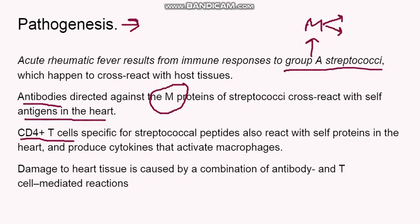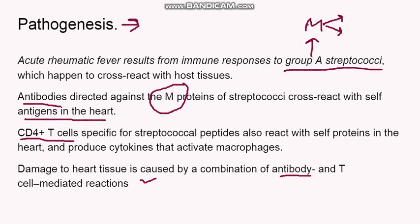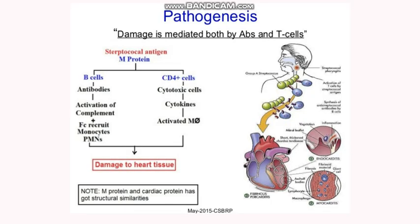So the damage to the heart tissue is a combination of both antibody and T cell mediated reactions. This is an immunologically mediated reaction and it can involve all the layers of the heart. That means there can be endocarditis, myocarditis, and pericarditis, and this is known as pancarditis. So the involvement of the heart is pancarditis.